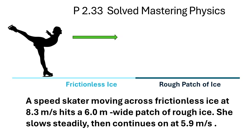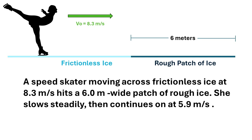Hello guys, today we are going to analyze this problem and see how kinematic equations apply to this case. A speed skater moving across frictionless ice at 8.3 meters per second hits a 6-meter wide patch of rough ice. She slows steadily and then continues at 5.9 meters per second. The skater was sliding across frictionless ice with an initial speed of 8.3 meters per second.